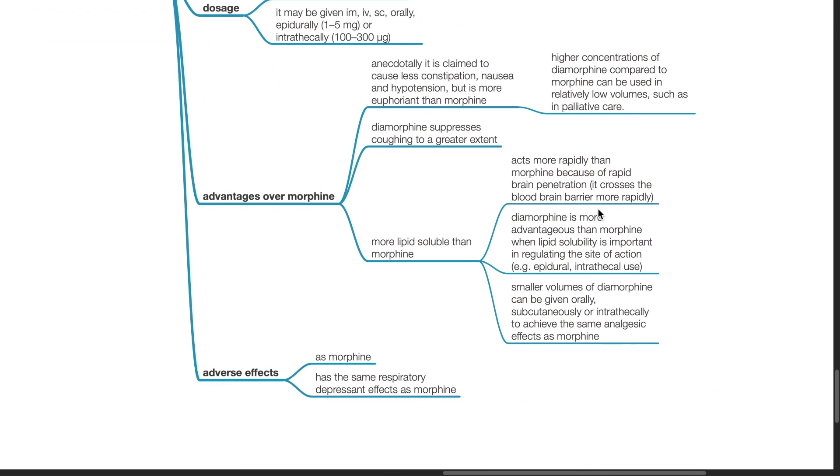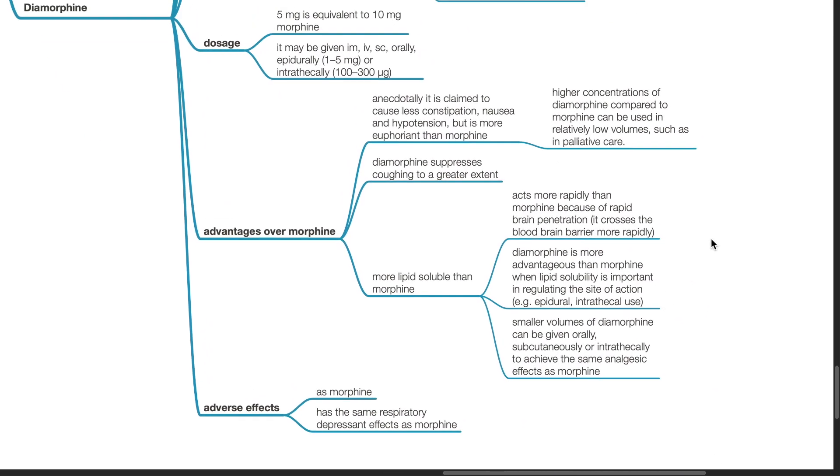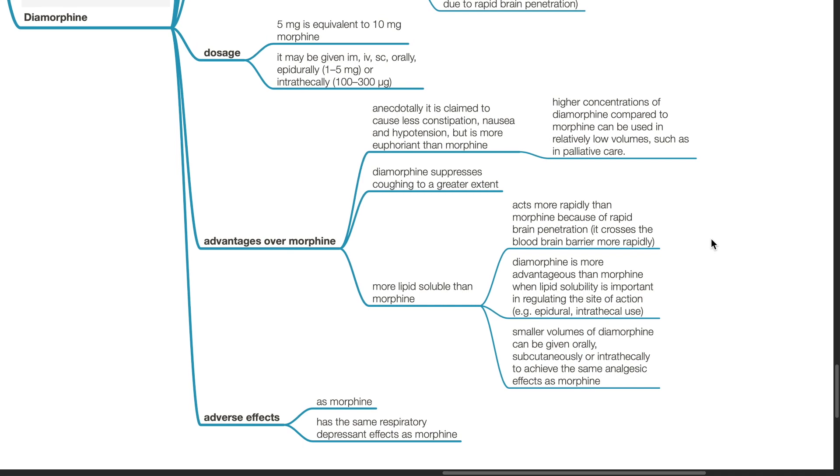Advantages of diamorphine over morphine. Anecdotally, it is claimed to cause less constipation, nausea and hypotension, but it is more euphoric than morphine. Higher concentrations of diamorphine compared to morphine can be used in relatively low volumes, such as in palliative care. Diamorphine suppresses coughing to a greater extent than morphine. Diamorphine is more lipid soluble than morphine and acts more rapidly because of rapid brain penetration.